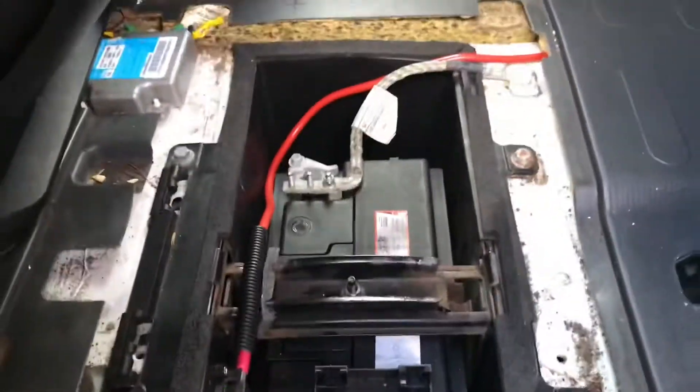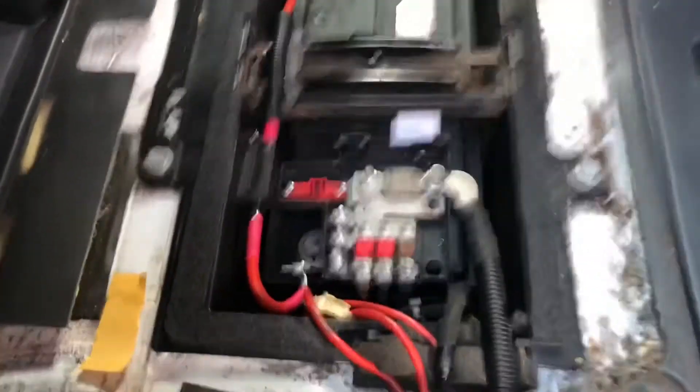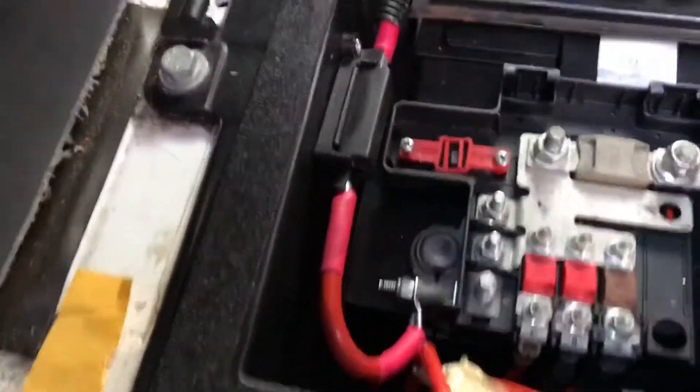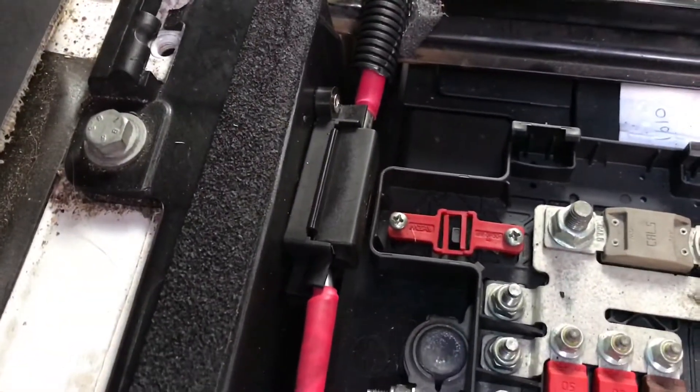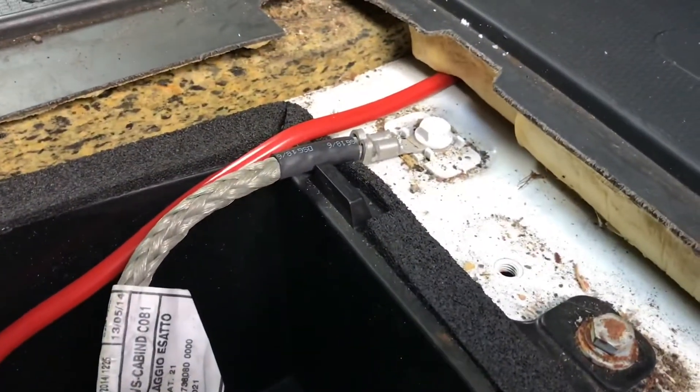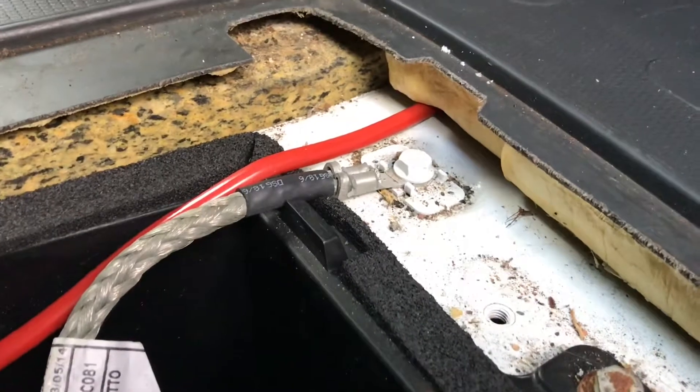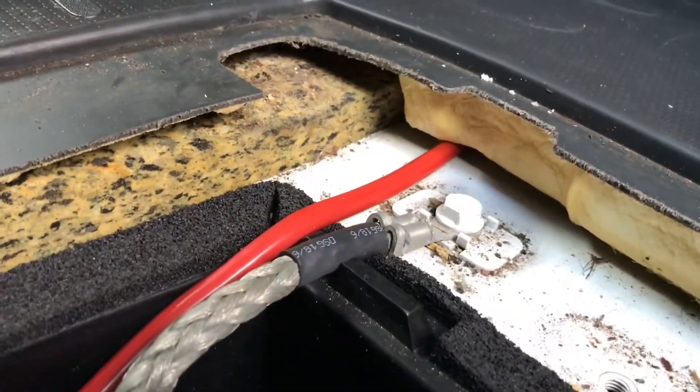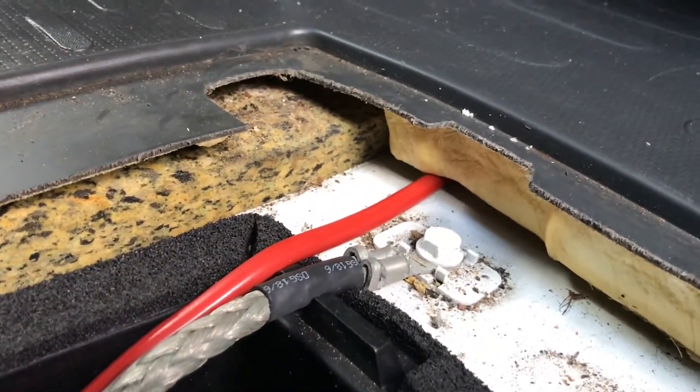This is the battery that's in the floor. I picked up the live there, goes into a 100 amp fuse, and around here just next to the earth cable, there's a small gap in the sponge insulation that allows you to get the cable through into the back.